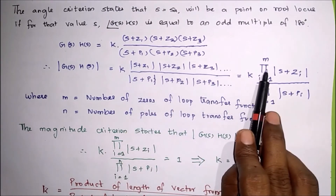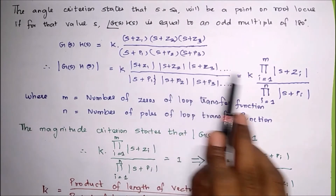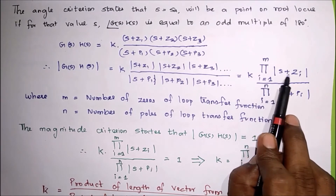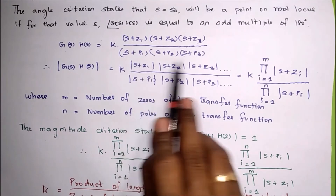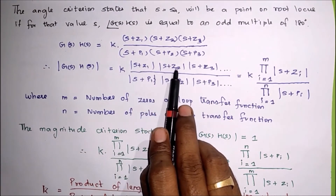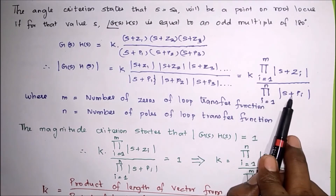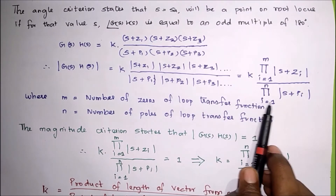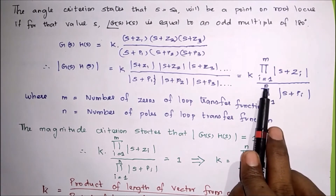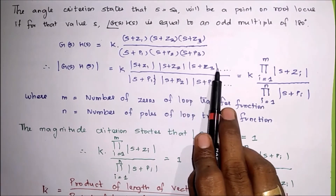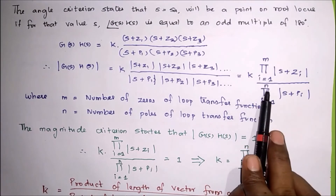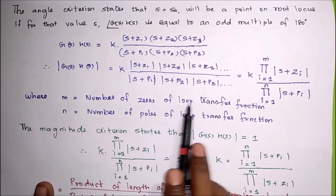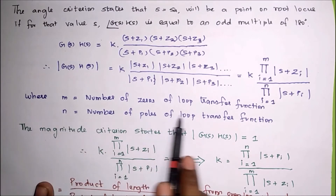This can be written as a product from I equals 1 to M, meaning M number of zeros, giving magnitude of (S + Z_i), and for poles, a product from I equals 1 to N, giving magnitude of (S + P_i), where N is the number of poles. M is the number of zeros of the loop transfer function, and N is the number of poles of the loop transfer function.